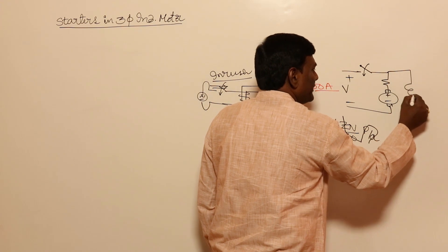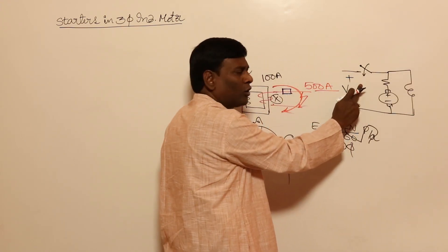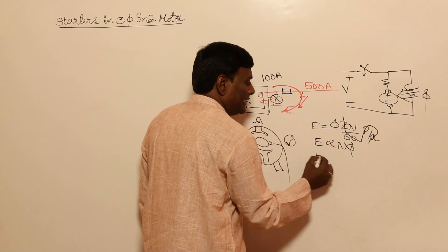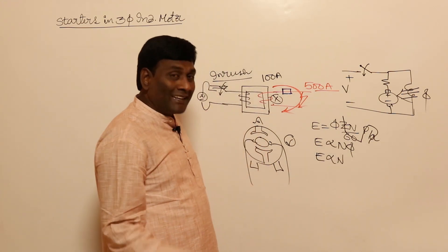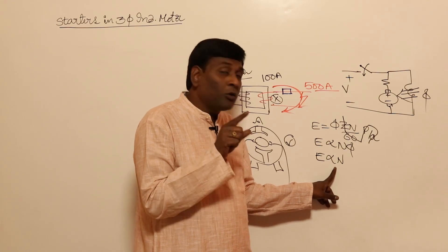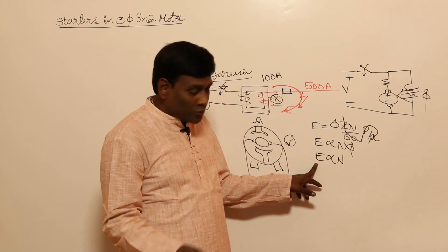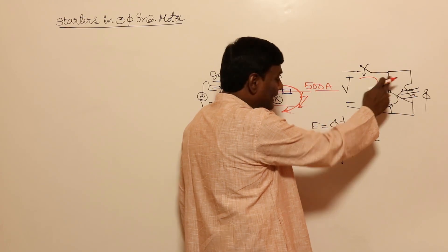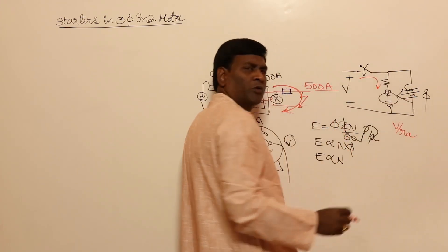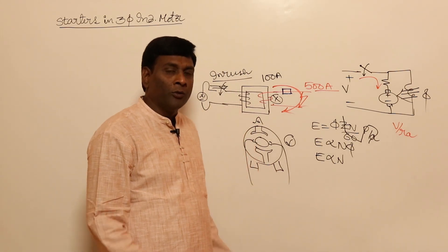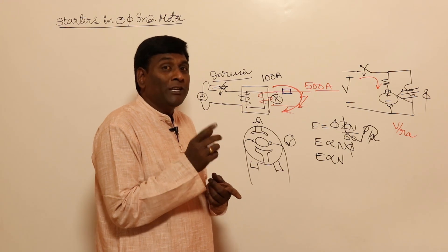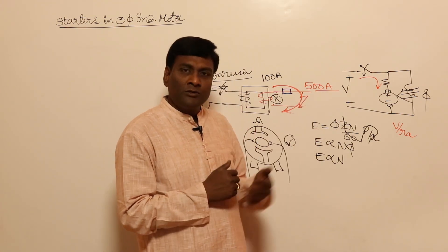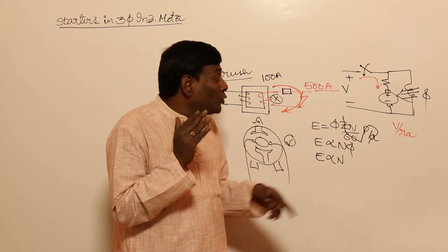When a DC motor is started with a shunt field, flux builds almost instantaneously. At starting, rotor speed is zero, so back EMF is zero. The armature current is V/Ra — a huge value — because back EMF E is zero. We keep a starter not just because of the huge current magnitude, but because that huge current will persist for a long time.